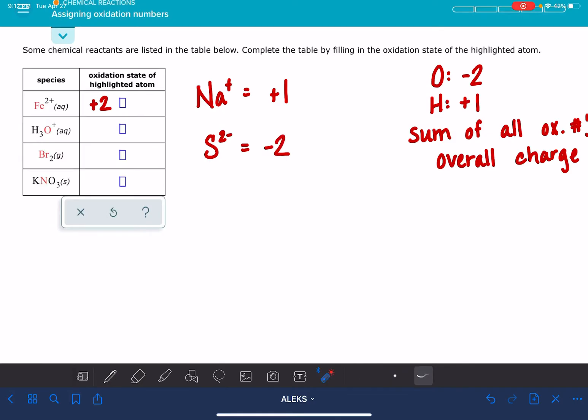One thing to keep in mind when you're entering these into Alex, when we're writing charges, we write the magnitude first and the sign second. But when we're writing oxidation numbers, we write the sign first and the magnitude second. So make sure you get them in the right order.